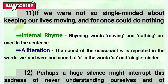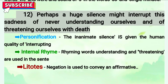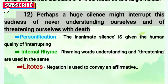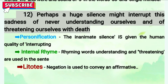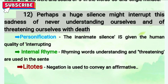Twelfth line: 'Perhaps a huge silence might interrupt the sadness of never understanding ourselves and of threatening ourselves with death.' The first figure of speech is personification — silence is given the human characteristic of interrupting. Next is internal rhyme — 'understanding' and 'threatening' are two rhyming words in the same sentence. The figure of speech litotes is also used — 'never' is a negative word used to convey a positive meaning.